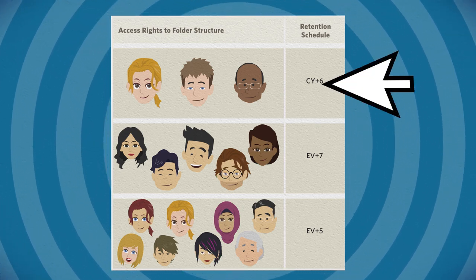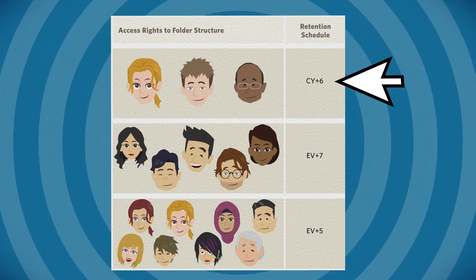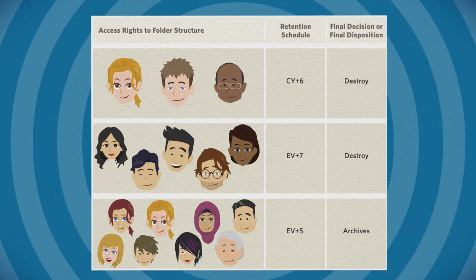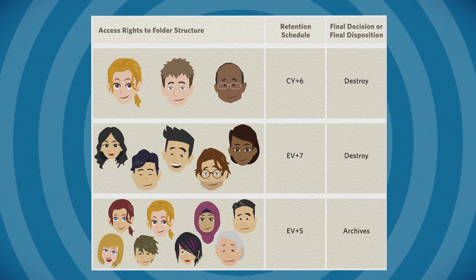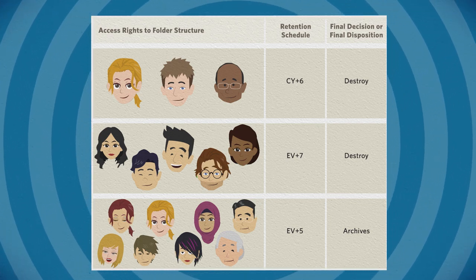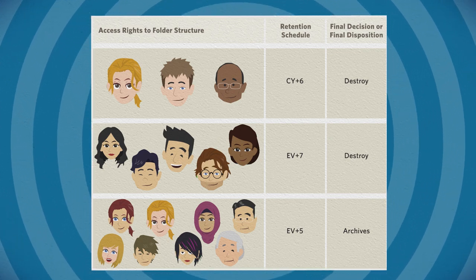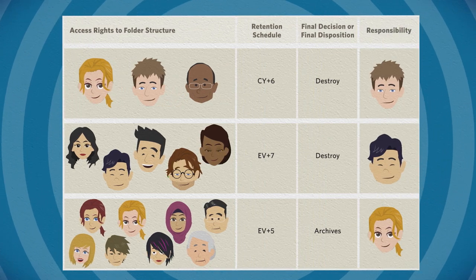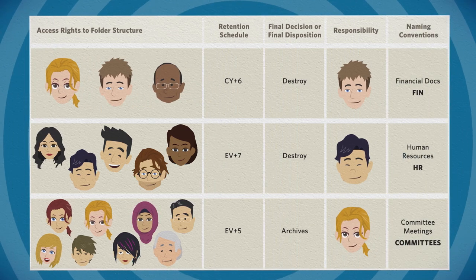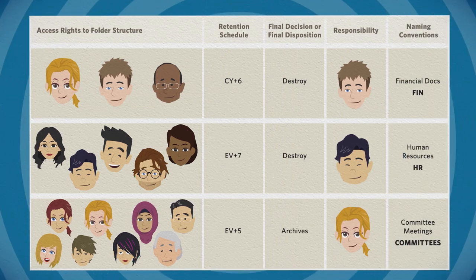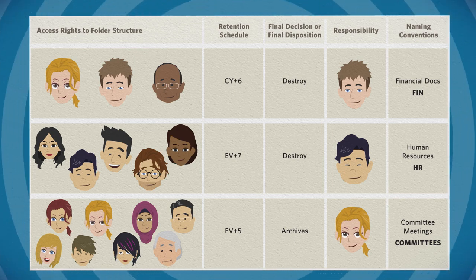Each folder is mapped to a time limit for retention — this might be long-term or shorter-term. This way, information that does not need to be retained is removed on a predictable schedule. This process then creates a folder structure based on a durable system tied to the retention schedule. The team finally implements a responsibility matrix tied to the structure and a naming standard for documents.